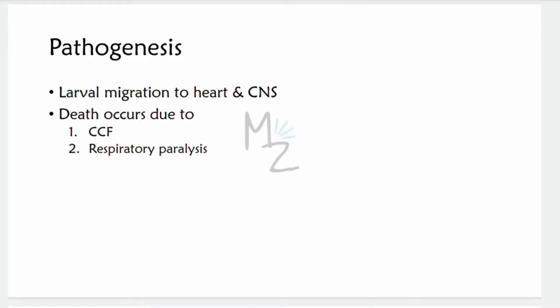Regarding pathogenesis: signs of cardiac and central nervous system disease are frequent because larvae migrate to these tissues as well. Death, which is rare, is usually due to congestive heart failure or respiratory paralysis.